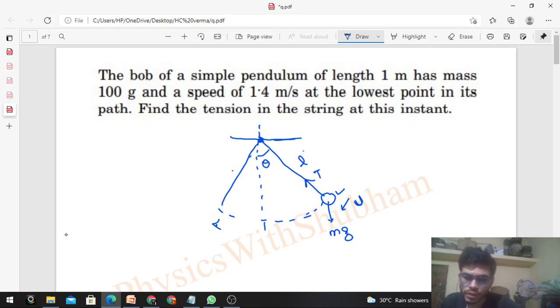Take the components of mg in this direction and this direction. You can see mg cos θ because this angle will be θ, and this angle is the same angle. And here will be mg sin θ.